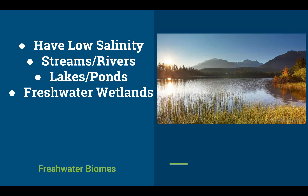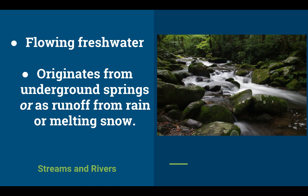Starting with freshwater biomes — these have little or no salinity and consist of streams, rivers, lakes, ponds, and freshwater wetlands. Streams and rivers are flowing freshwater, and usually this water comes from runoff, which we learned about in the hydrologic cycle, but it could also be fed from underground springs where water trapped underground surfaces and feeds rivers and streams.